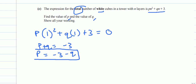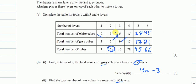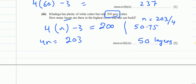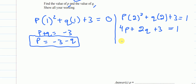For layer 2 (n = 2): p(2)² + q(2) + 3 = 1, which gives 4p + 2q + 3 = 1. Bringing 3 to the right: 4p + 2q = −2. This is equation 2. Substituting p = −3 − q into equation 2.